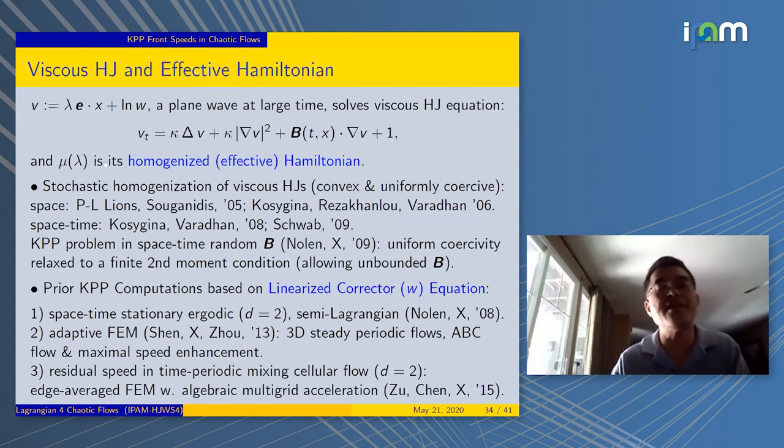This falls into the general viscous Hamilton-Jacobi equation. The μ we talked about in the last slide is exactly the effective Hamiltonian, or the homogenized Hamiltonian. In this direction, there's more work that goes beyond the quadratic nonlinearity. For any convex, uniformly coercive Hamiltonian, you can homogenize. In the KPP case, because it's special, we could do a little bit more, relax the uniform coercivity to finite second moment conditions. This allows the unbounded velocity.